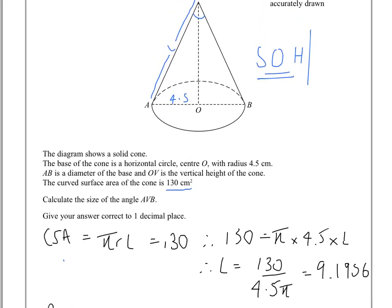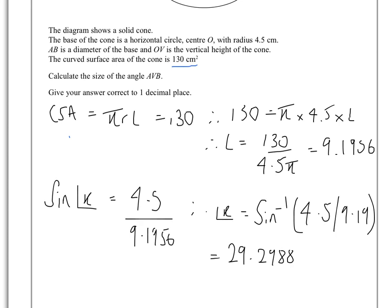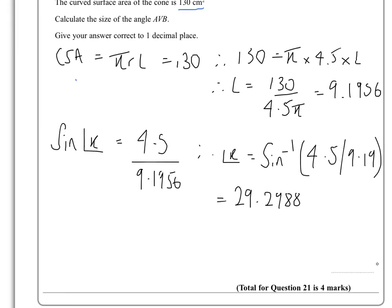Now, we're not finished there, because what we've just done is work out this angle here. We now need to double it to get the whole thing. So what we therefore have to do, we have to multiply that by 2, and that gives us 58.5976.